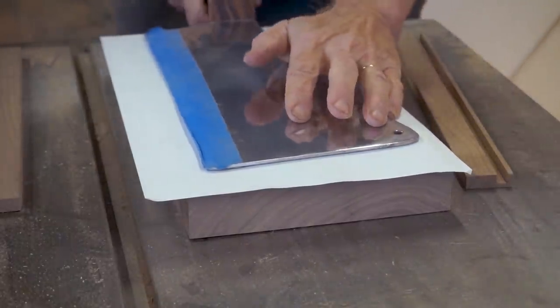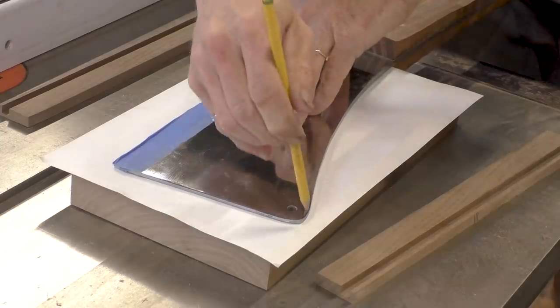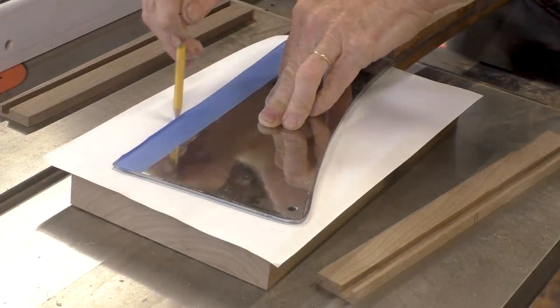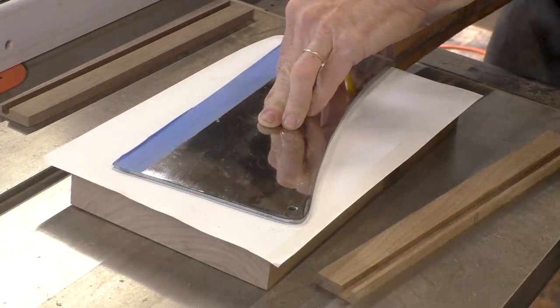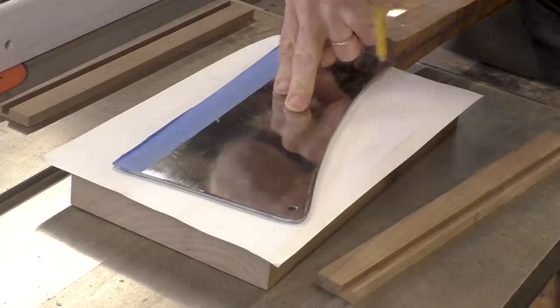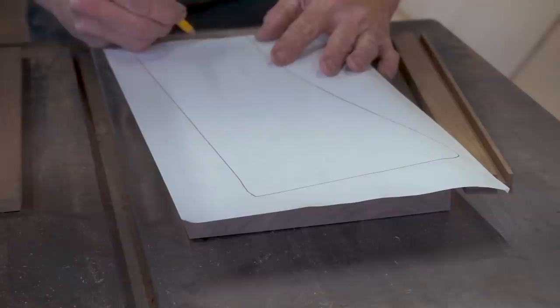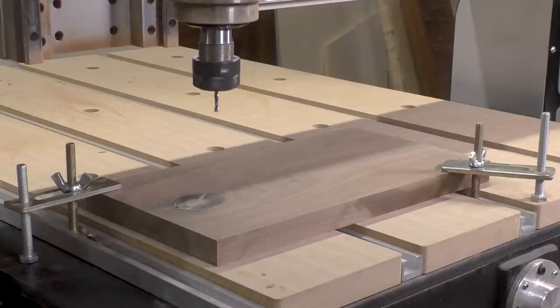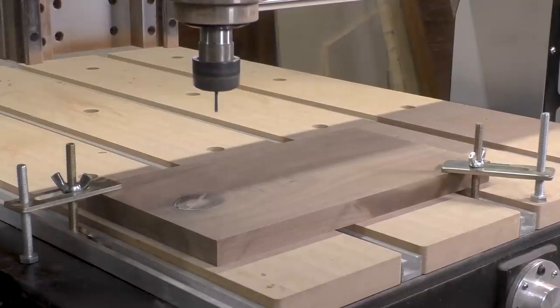And now I'm tracing out the shape of the blade onto a piece of paper. I'm going to scan that into my computer and then I will import that into VCarve Pro and create the pattern that my CNC machine will use. And now the CNC machine is going to take care of all the work of cutting out the shape of the knife blade.